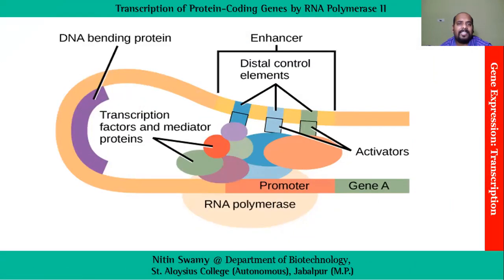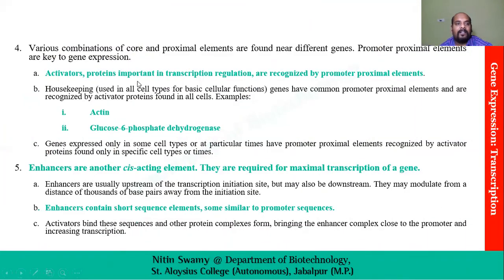In eukaryotes, apart from promoter sites, there are some different sites known as enhancers. These are distinct sites present far away from the promoter region but are still able to control the rate of transcription. On enhancer sites there are proteins which bind to these enhancer sites, known as activators. Activators are those proteins which sit on enhancers and control the rate of transcription. They are recognized by promoter proximal elements, and enhancers contain short sequence elements similar to promoter sequences.